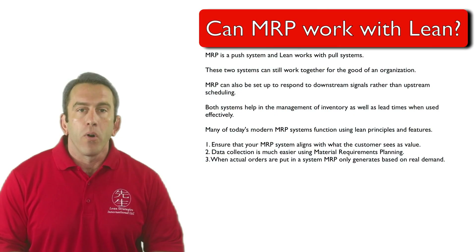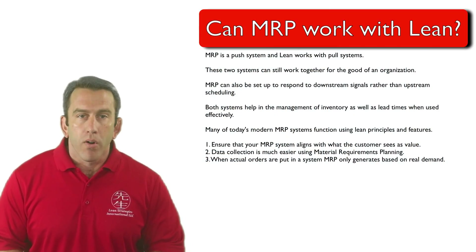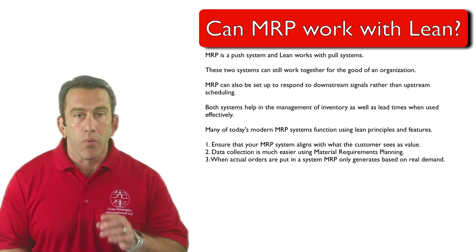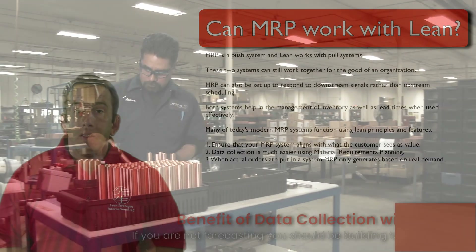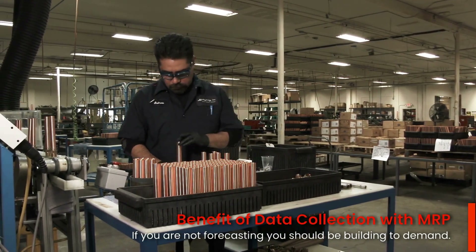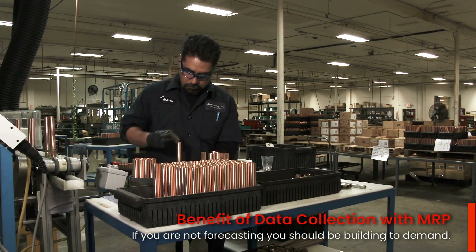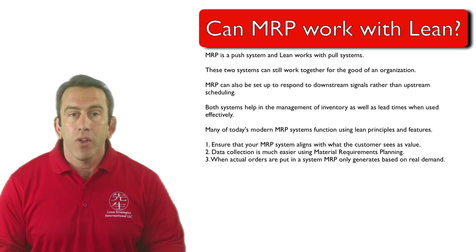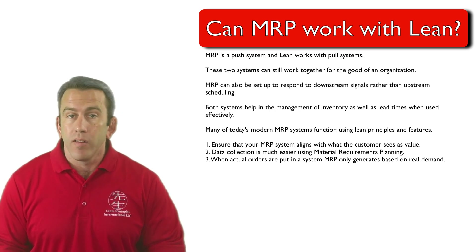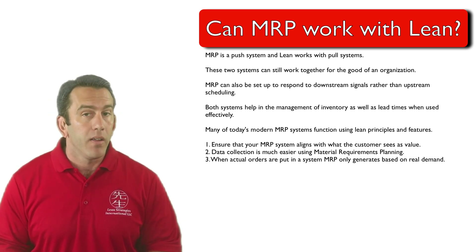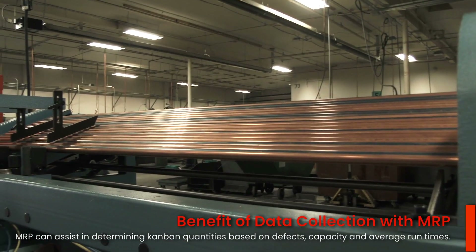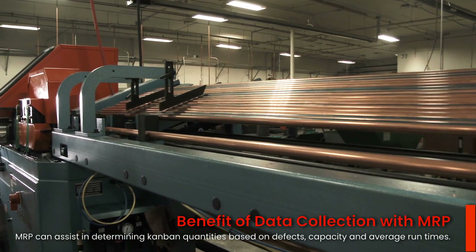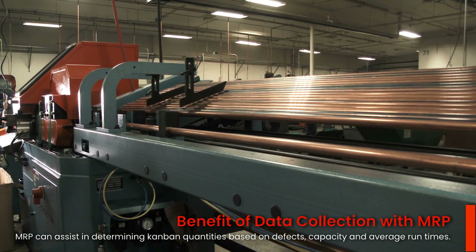It's important to remember that when only actual orders are put in a system, MRP only generates based on real demand. This is important to understand because if you're not forecasting, you should be building to demand. You can use MRP to calculate your different lot sizes and taper down work in process. MRP can also assist in determining Kanban quantities based on defects, capacity, and average run times.